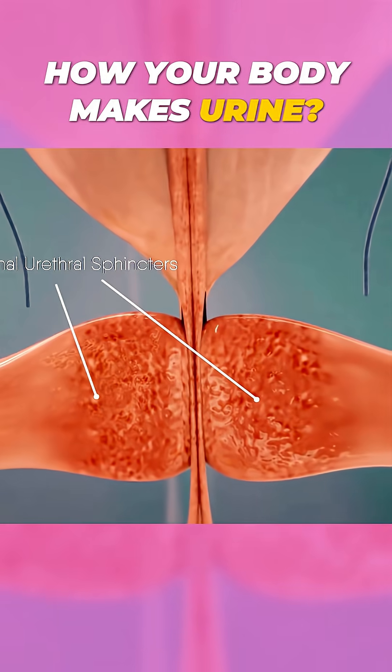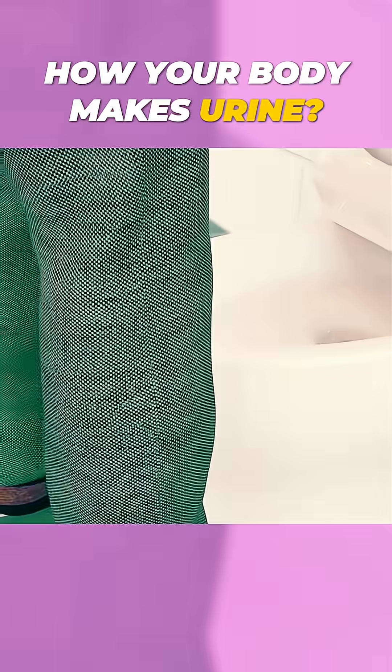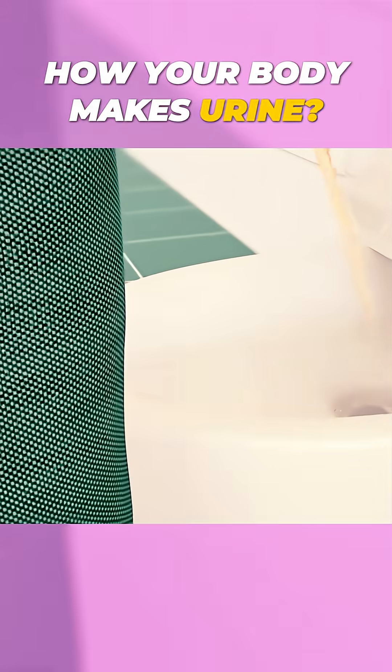When it's time, your brain signals the bladder to tighten and the sphincter muscles to relax, letting urine flow out through the urethra.